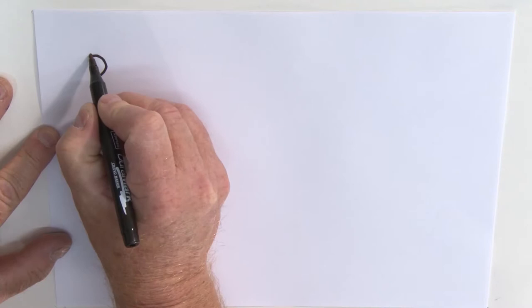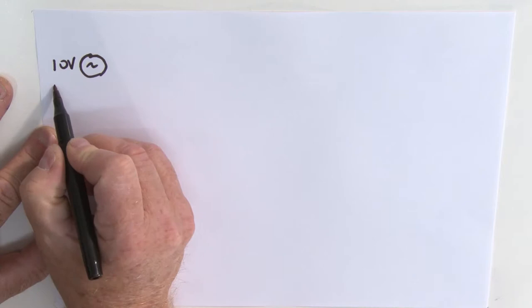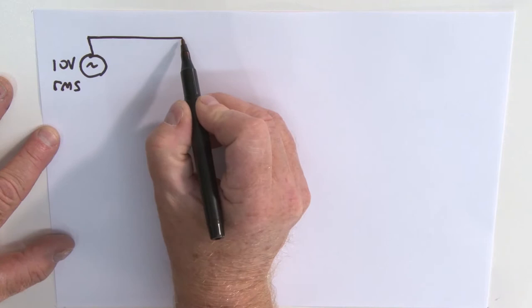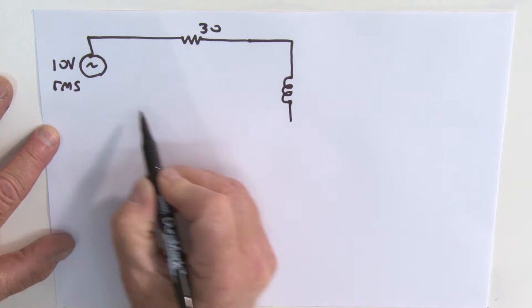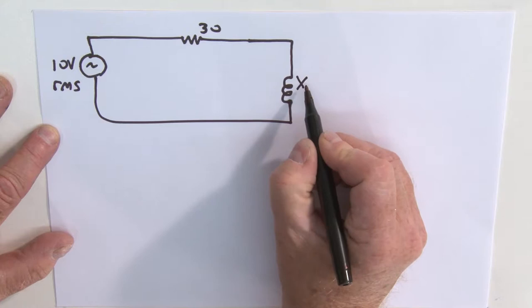Let's look at this example. We've got a source, we're going to set that to 10 volts, and that's going to be an RMS value. We're going to take that source, connect it to a resistor, we'll make that a 30 ohm resistor, and then we'll connect that to an inductor, and then complete our circuit like so.